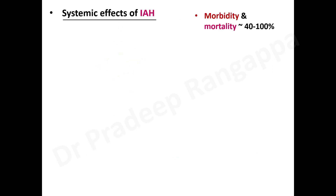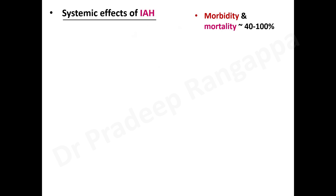This important slide covers the systemic effects of intra-abdominal hypertension. Severe IAH leading to abdominal compartment syndrome carries morbidity and mortality of up to 40 to 100%, making this a critical condition to recognize and treat. Increased abdominal pressure has deleterious effects on all organs because microcirculation and perfusion of multiple organs are affected — we'll go through these head to toe.